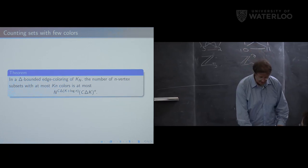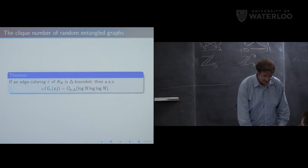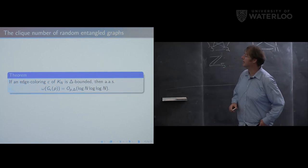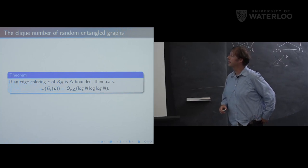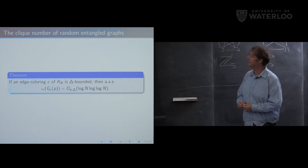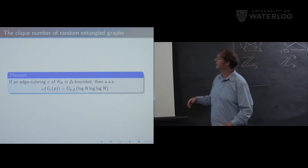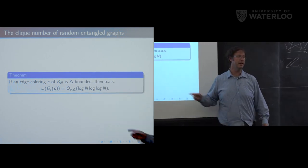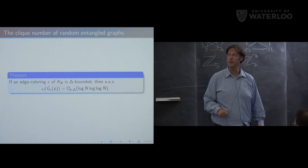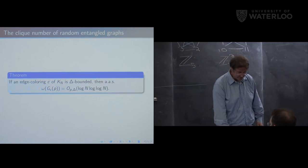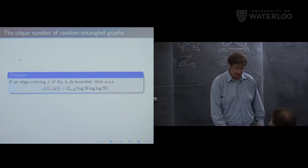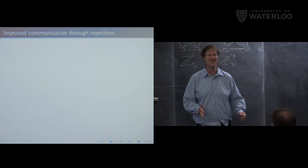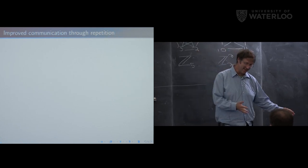The main theorem is that for a δ-bounded edge coloring C, the random entangled graph G_C(p) has clique number — and also independence number — at most C(p, δ)·log(N)·log log(N) asymptotically almost surely, where C(p, δ) is a constant depending on p and δ.